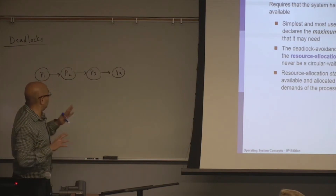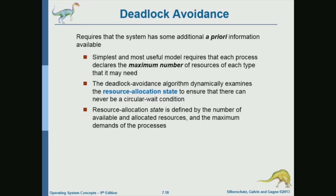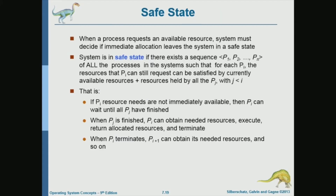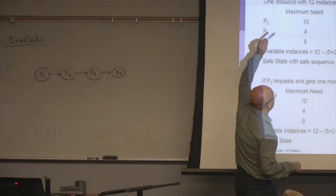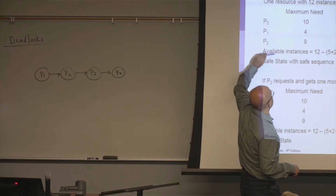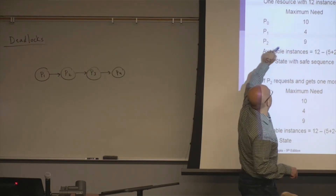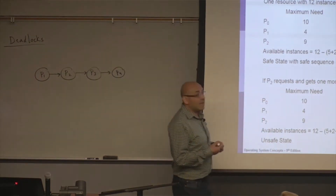This seems very abstract, so let's look at a numerical example for the concept of the safe state. This example will illustrate the concept of the safe state and linear ordering. I have one resource with 12 instances to simplify things, and three processes: P0, P1, P2. Each process has declared its maximum needs. P0 needs 10 instances, P1 needs 4 instances, and P2 needs 9 instances.